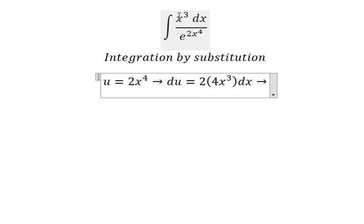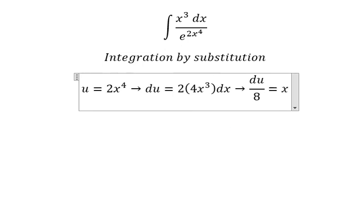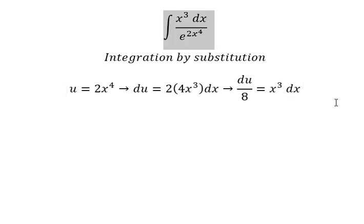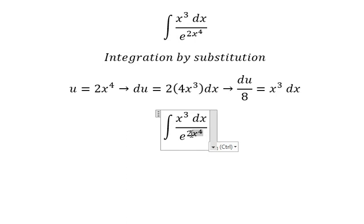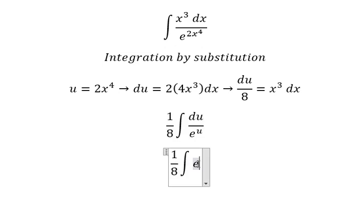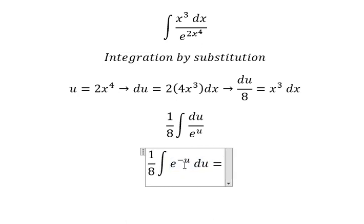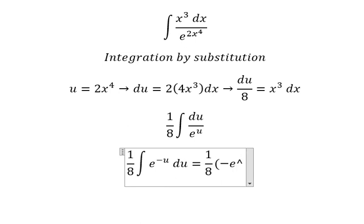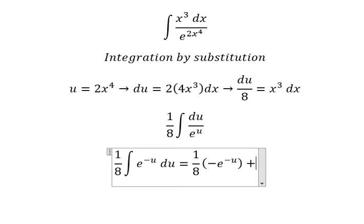Because we don't have the number 8 here, we need to divide both sides by 8. So this one we change by u, and this one we change by du over 8. We can write this as e to the power of negative u du. The integration gives 1 over 8 times negative e to the power of negative u, and we put the constant c.